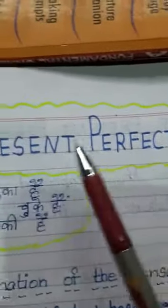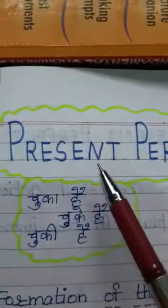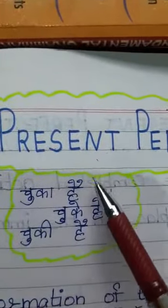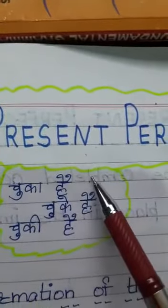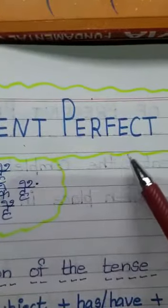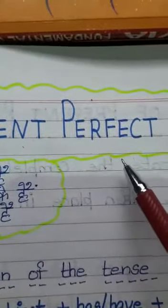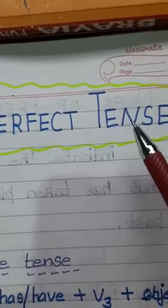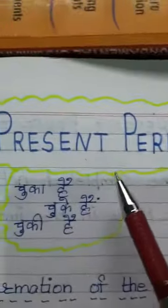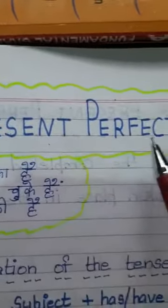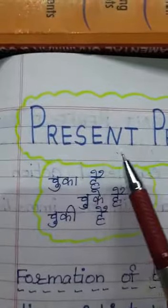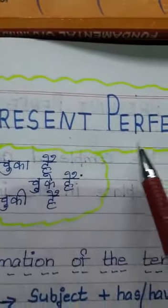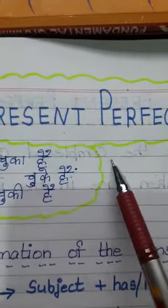Let us elaborate the heading first. Present means the time that is going on. Perfect means actions that are done or completed. And the word tense relates to time. So present perfect tense deals with the representation of the done action in the present.